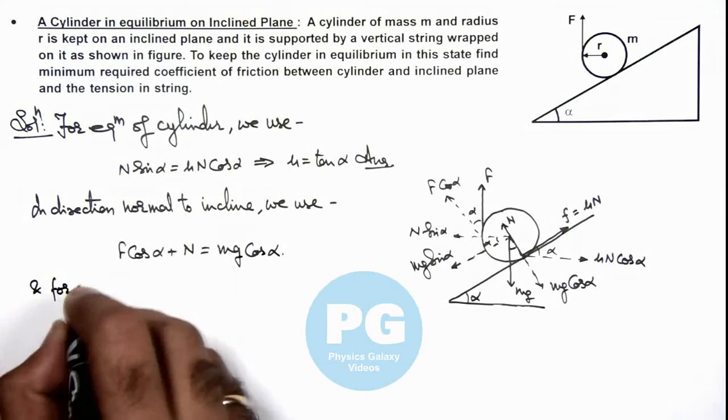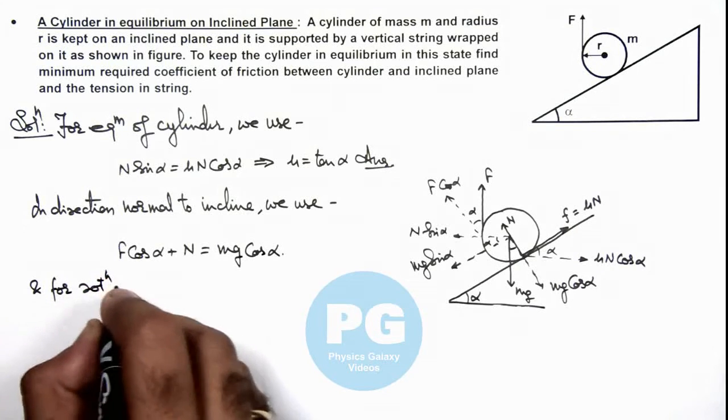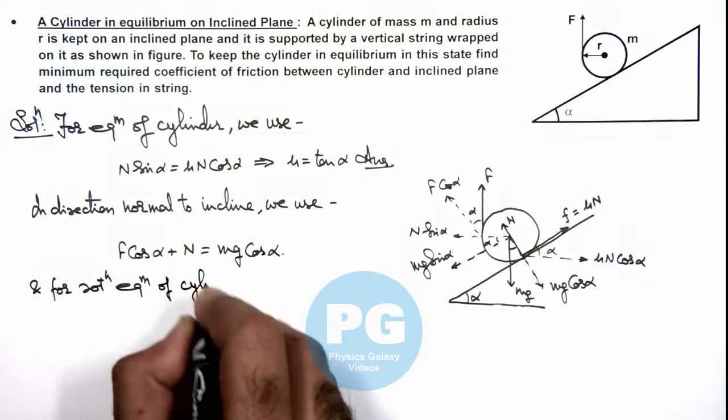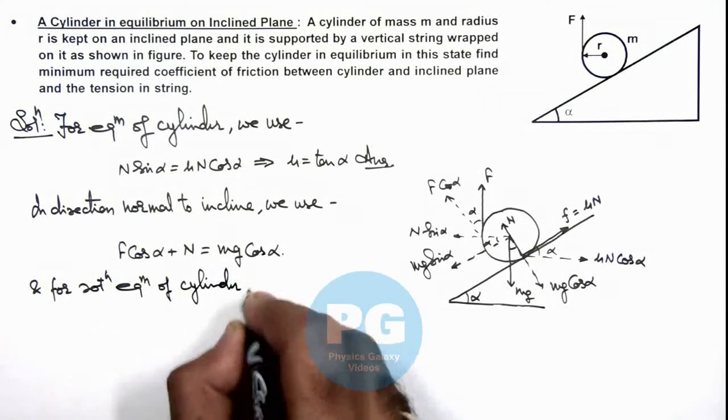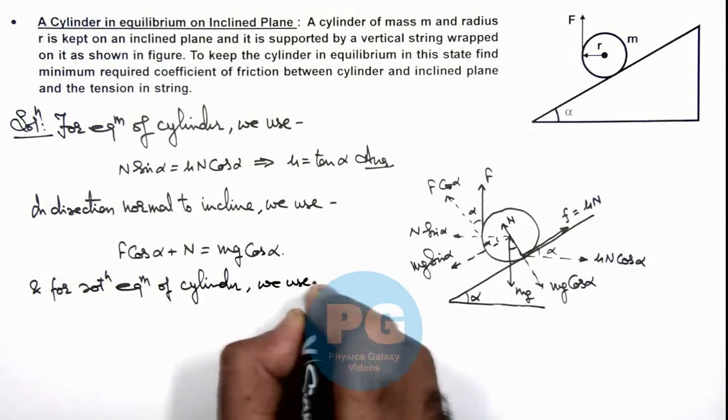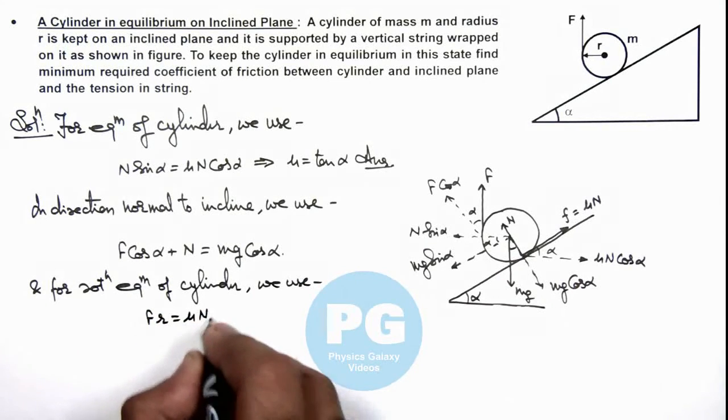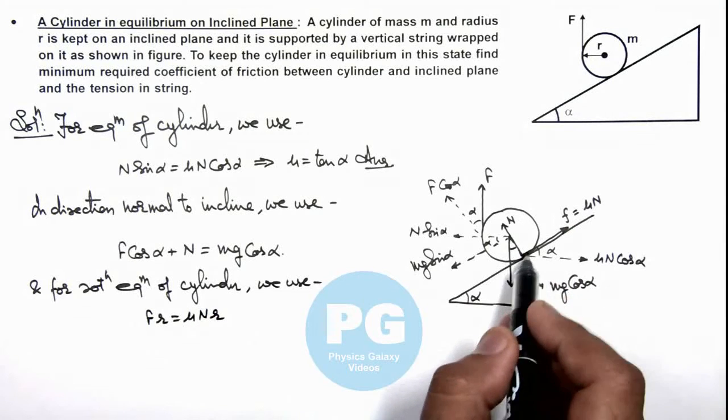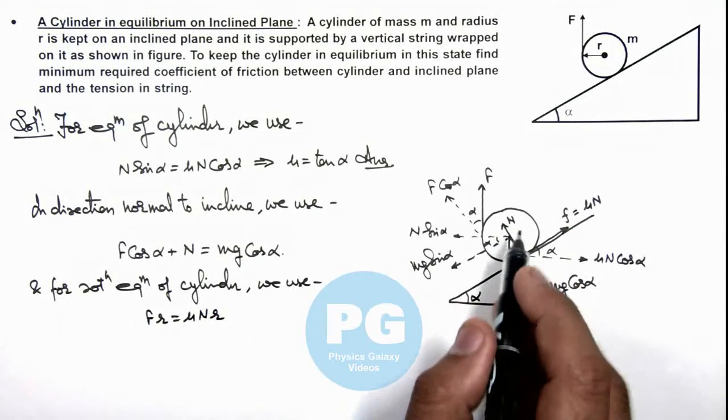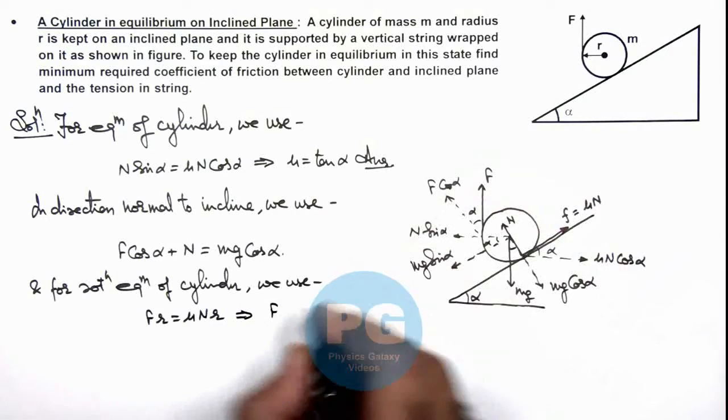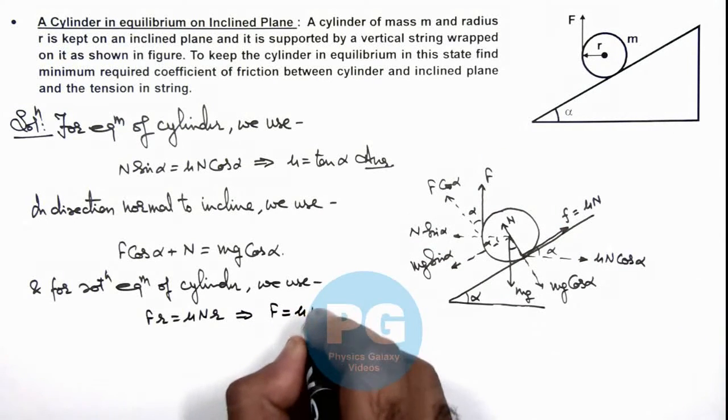And for rotational equilibrium of cylinder, we can write Fr must be equal to μNr, because the two torques must balance each other. So this gives us the value of external force or the tension in the string should be equal to μN. So this is equation 1.